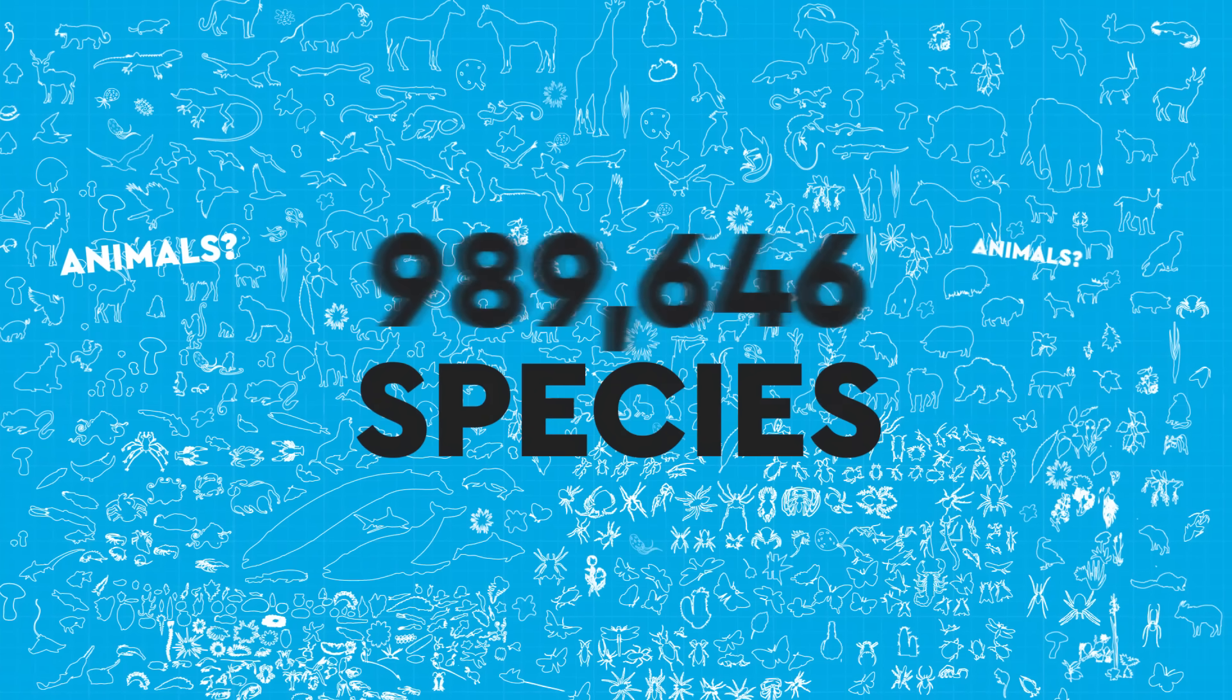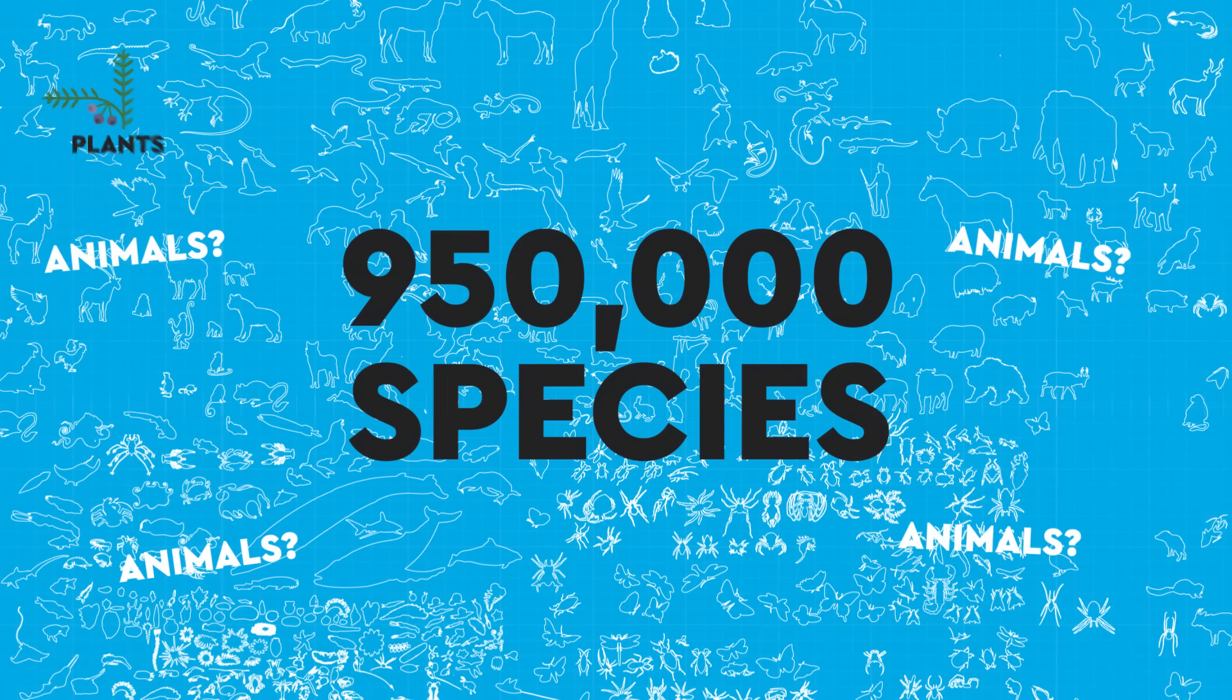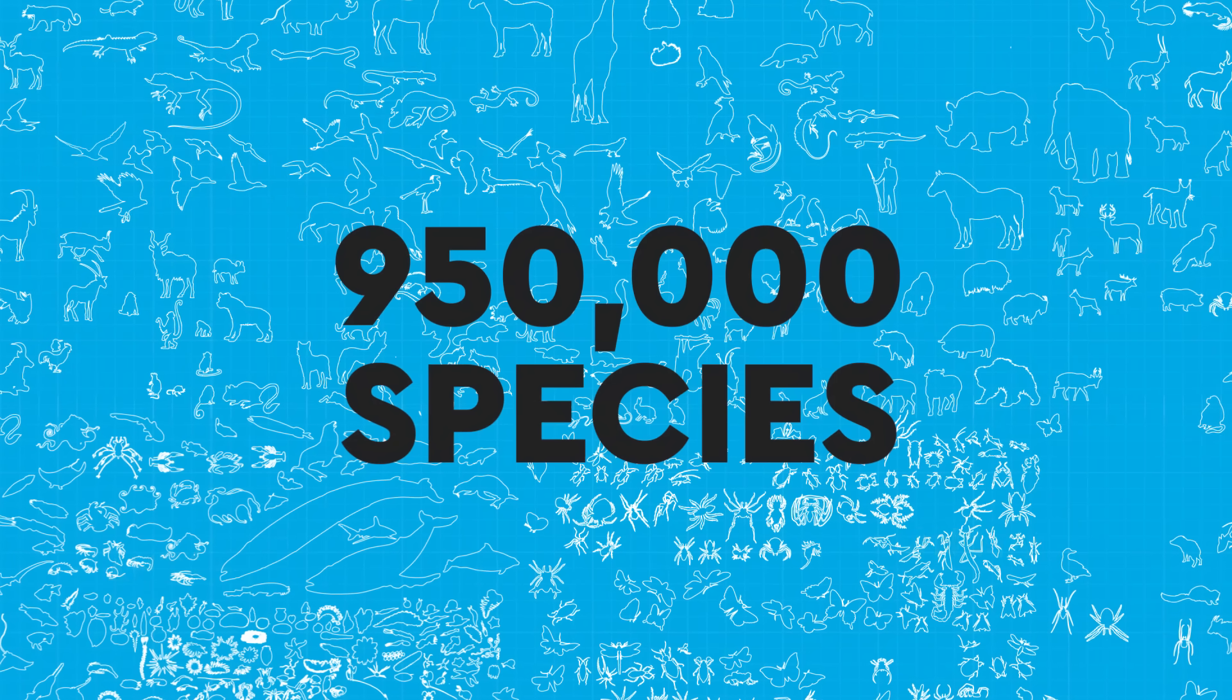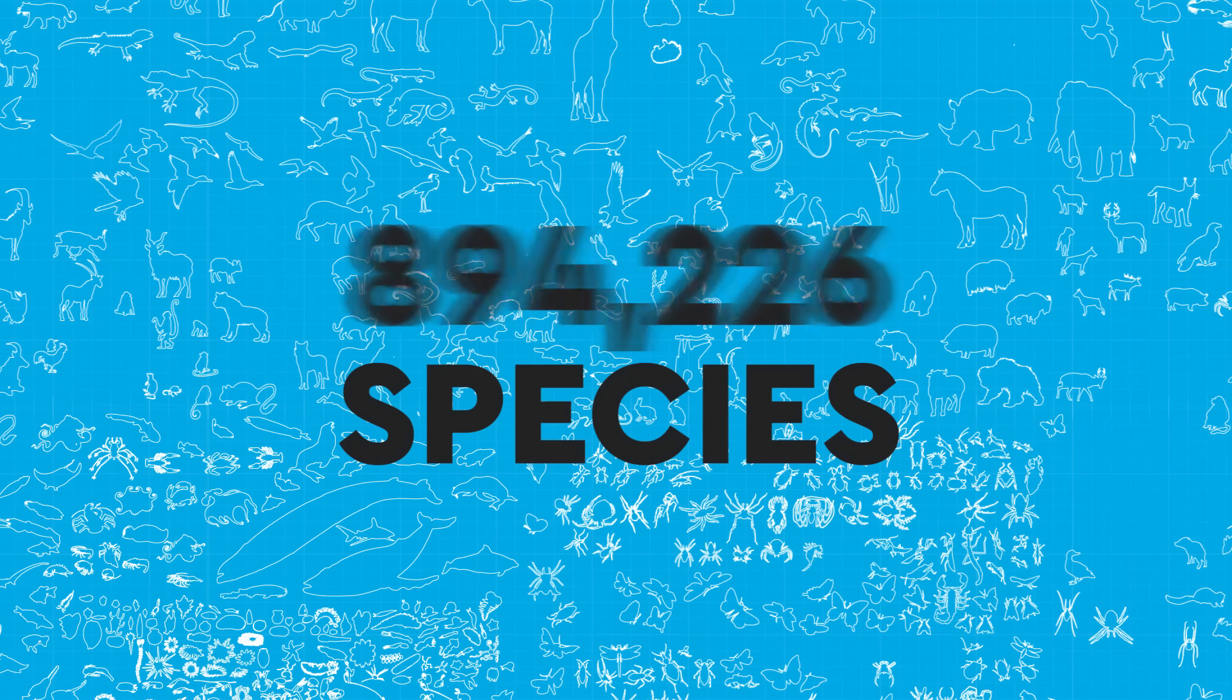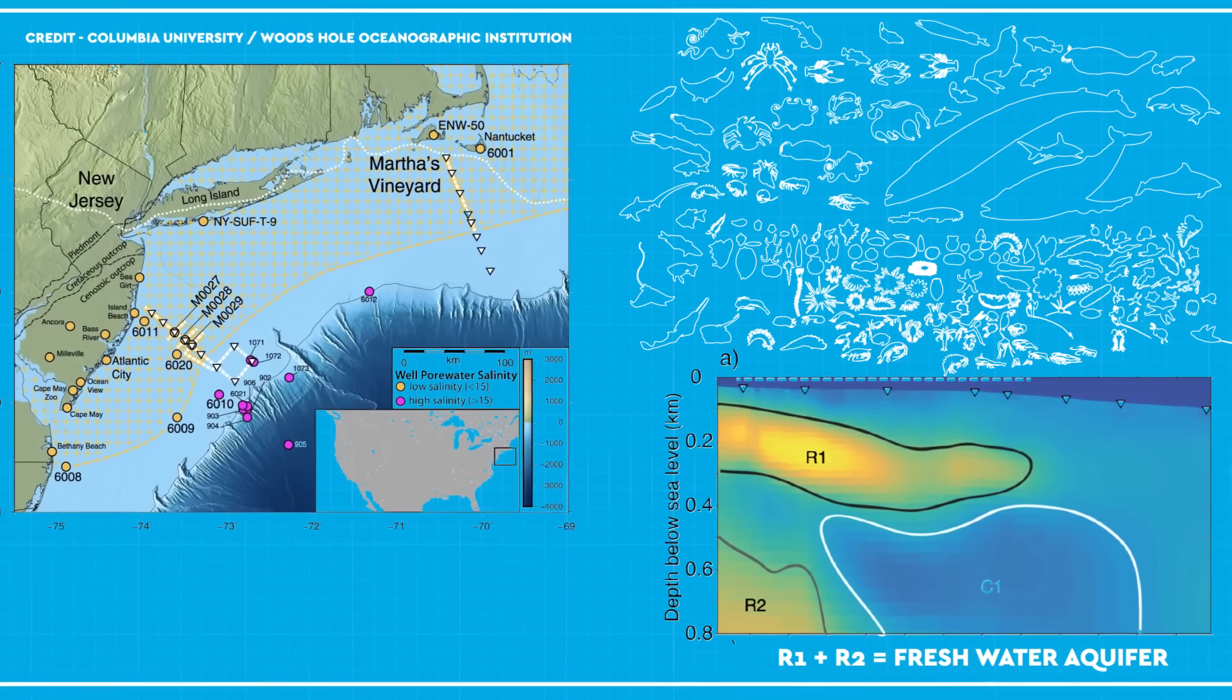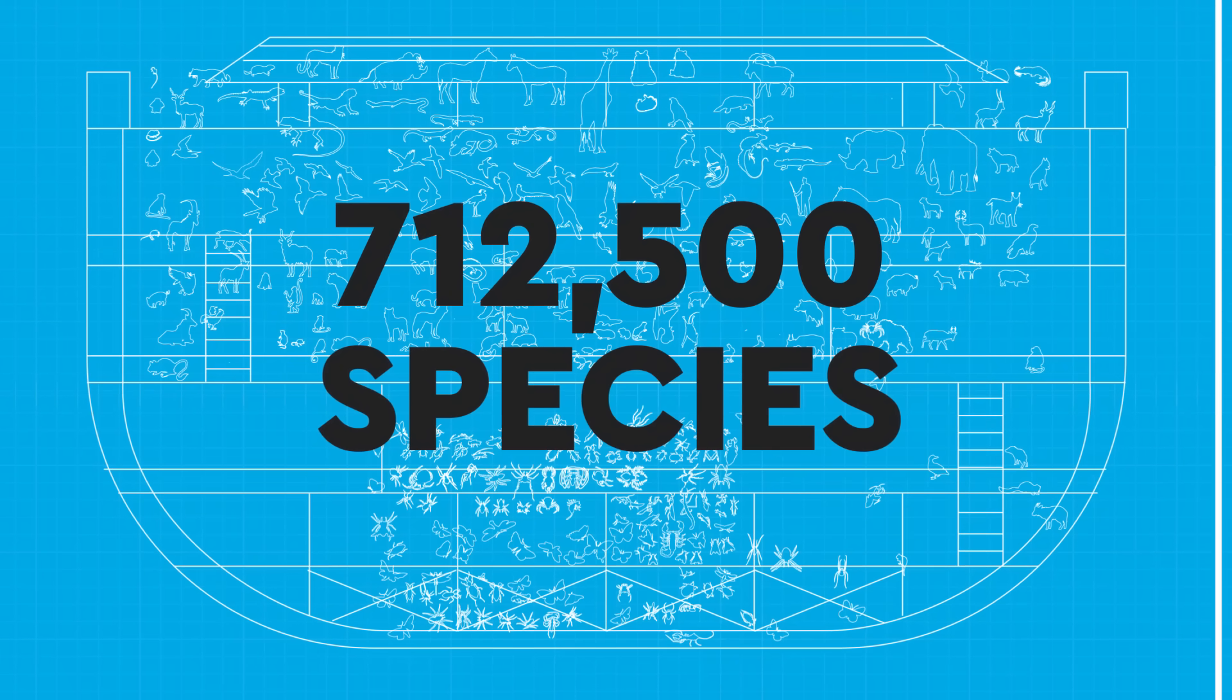But to make things even more simple for our ark designers, not all of those species are animals. In fact, only 950,000 of living species were classified as such, the rest being plants, fungi, protozoa, those are single-celled organisms like amoebas, and chromista, which are things like algae. And the final trick we're pulling is that only 75% of species live on land. If you're used to water, then you're on your own. Or you'll need to seek refuge in one of those freshwater pockets or deep sea aquifers. The end result is that we need to find space for 712,500 different species on the debunked ark.